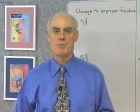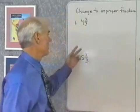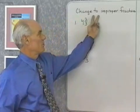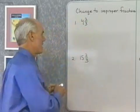A mixed number is the sum of a whole number and a fraction. Over here, I've written 4 and 2/3, and we want to change this mixed number to an improper fraction.